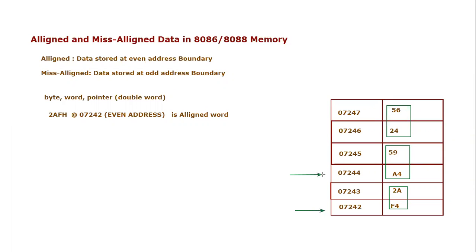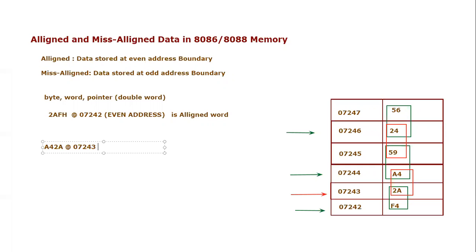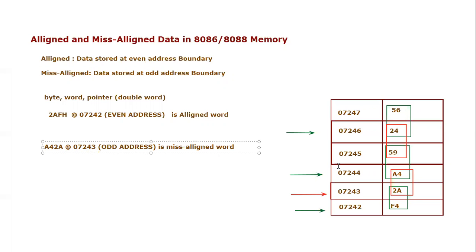Now let's consider the data in another arrangement. The word A42A is stored at address 07243, which is an odd address. Because it starts at an odd address, this is a misaligned word. That is the core concept of aligned versus misaligned data.